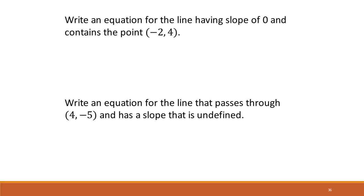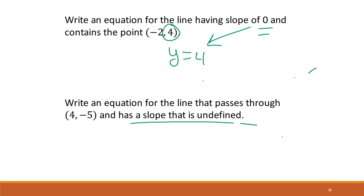To write an equation for a line having a slope of 0, remember slope of 0 is a y equals equation, so we use the y value of the given point. Then to write an equation for a line passing through 4, negative 5 with undefined slope, undefined slope means we use x equals, so it's the x value, giving x equals 4.